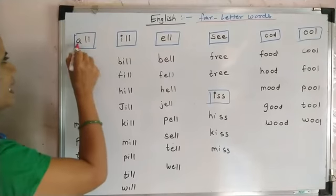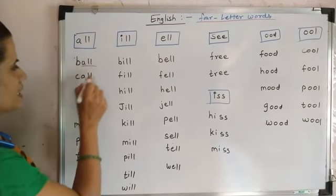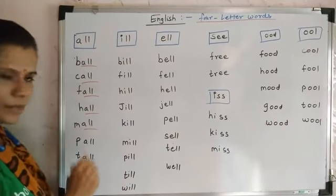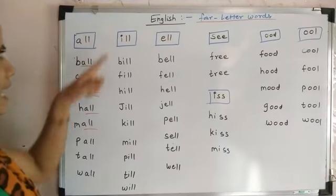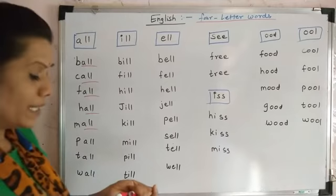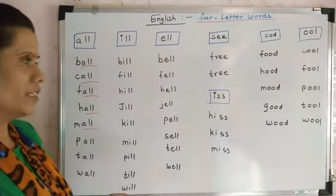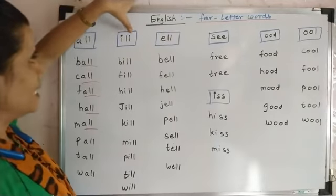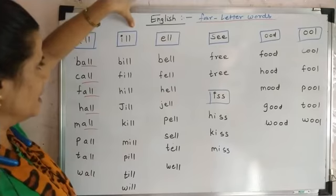This is the second one. A double L — what is common? We are going to start 4-letter words. I double L — ill.